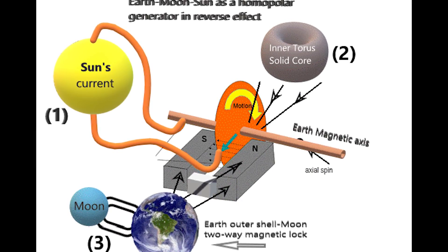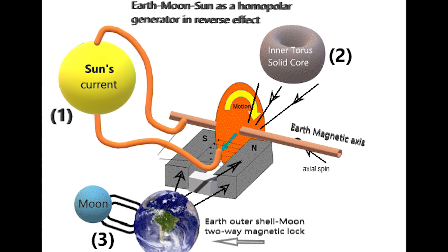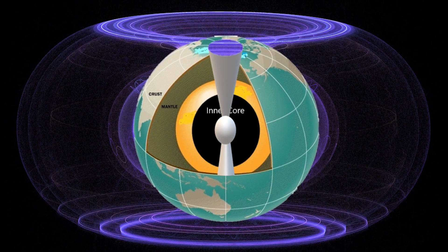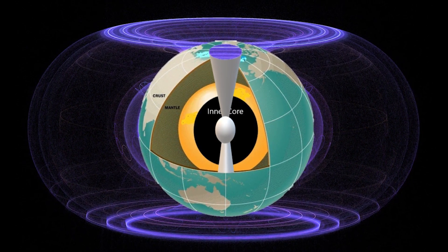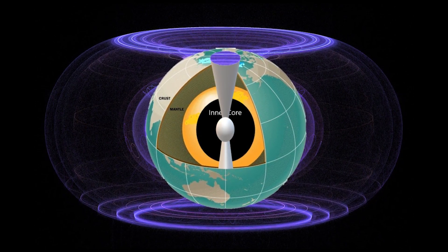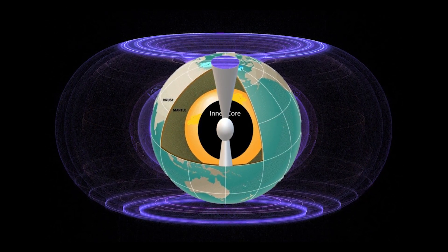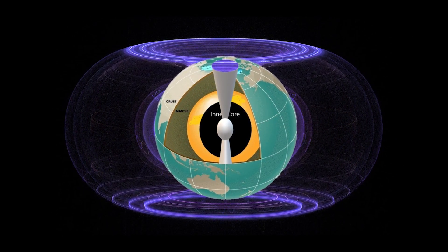The homopolar electromagnetic generator effect magnetizes the inner solid core. The magnetized inner core subsequently generates a torus-shaped magnetosphere over the entire planet aligned with the Earth's magnetic poles.